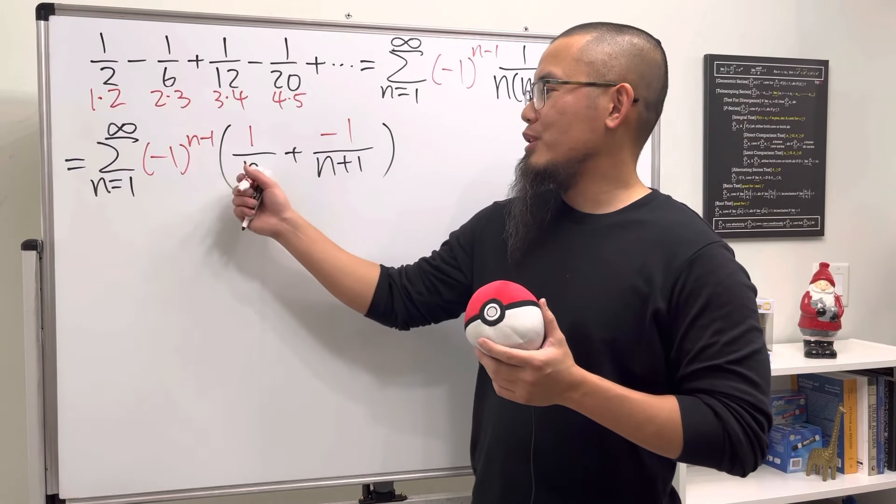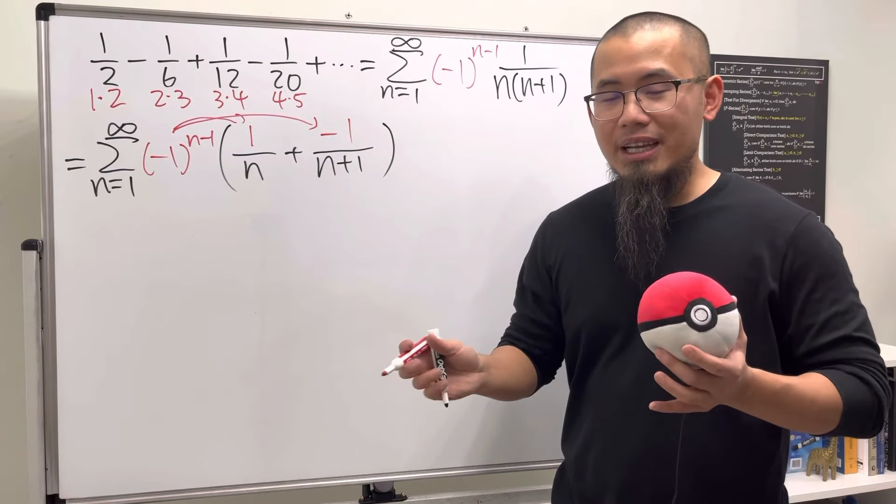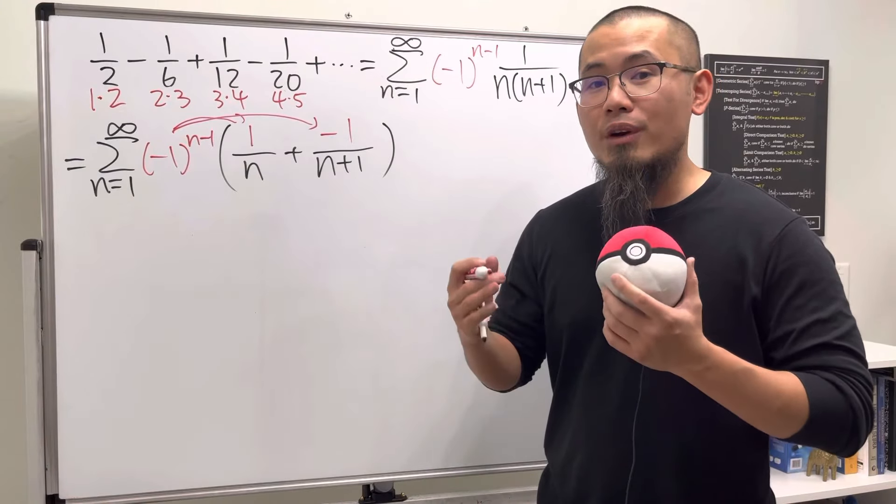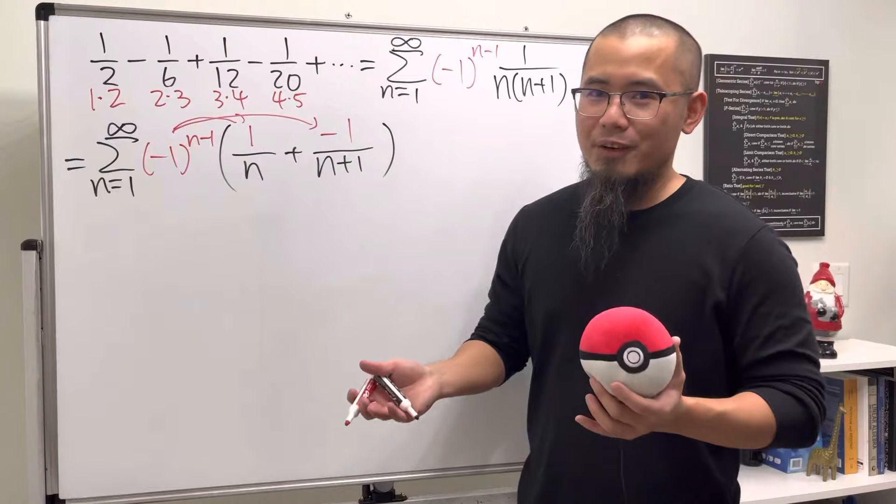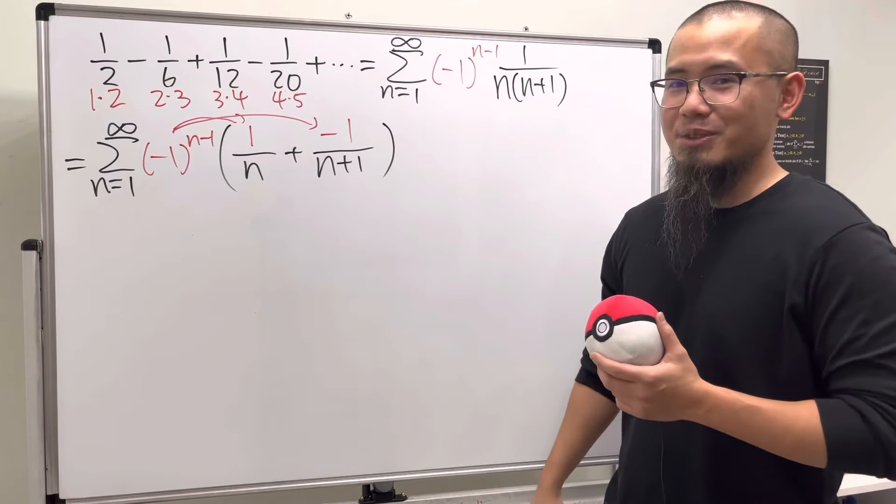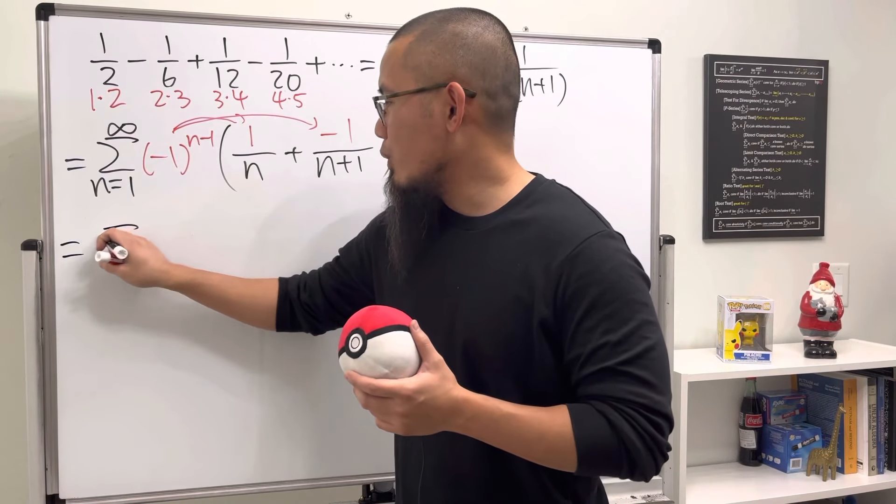Well, I will have to tell you we are pretty lucky this time because we can actually just distribute this inside and then separate them into two different series and then just compute them individually. And the reason that we can do that is because they both converge nicely and we can actually figure out the value of them pretty nicely too. So that's why it's not so bad for this question.